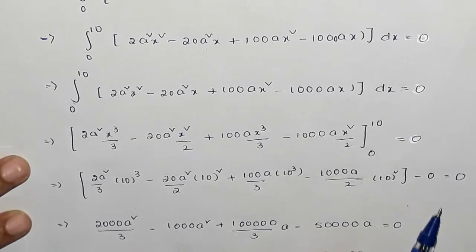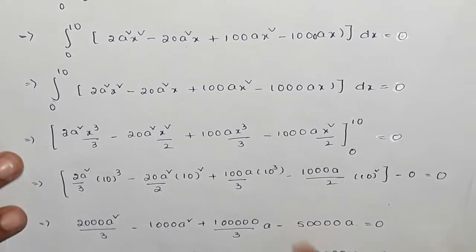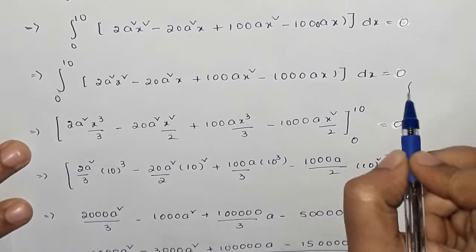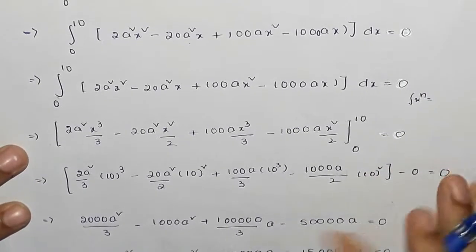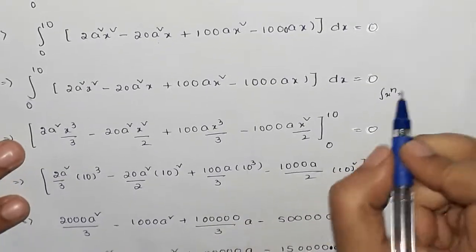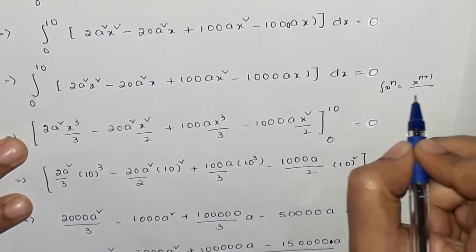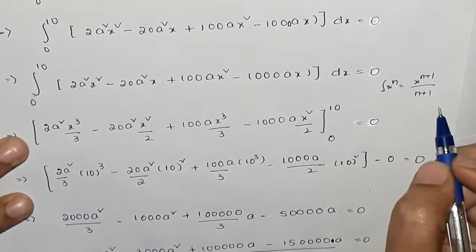We integrate using the power rule formula: the integral of x to the power n equals x to the power (n+1) divided by (n+1).